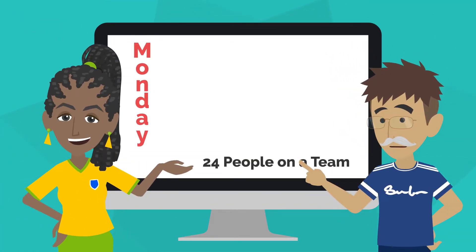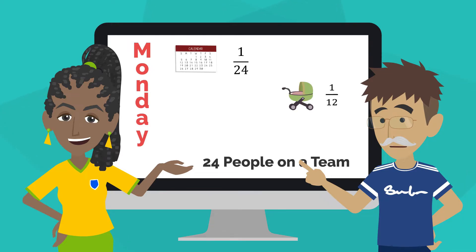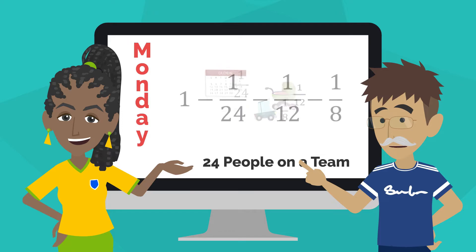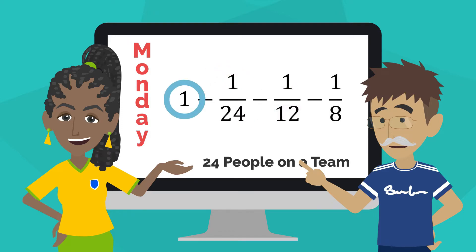For Monday, 1/24 has a conflict, 1/12 has a child care issue, and 1/8 said they have a transportation issue. This expression represents the whole team minus those who cannot attend. Simplify the expression to determine what fraction of the team can attend on Monday.